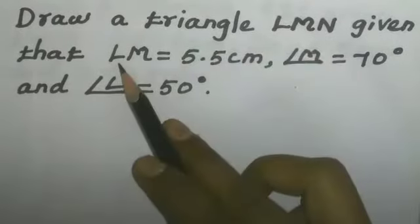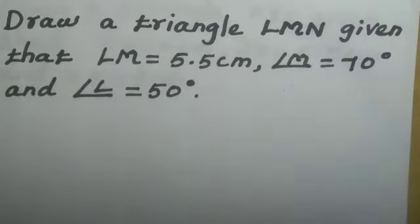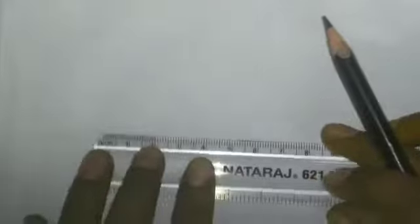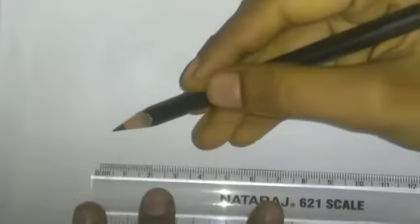First of all, line segment LM equal to 5.5 cm. Take a ruler then draw the line segment LM equal to 5.5 cm.